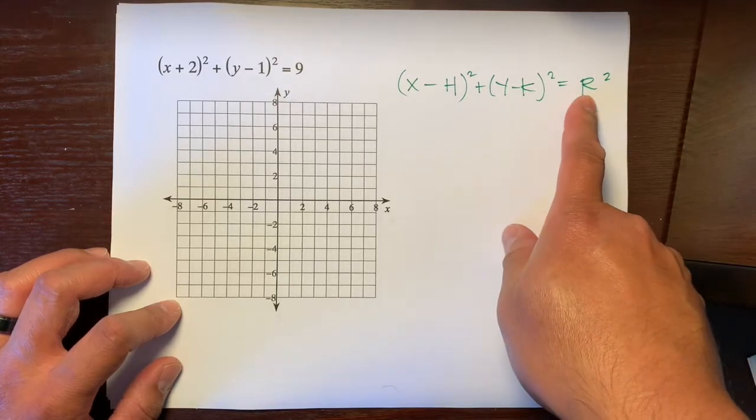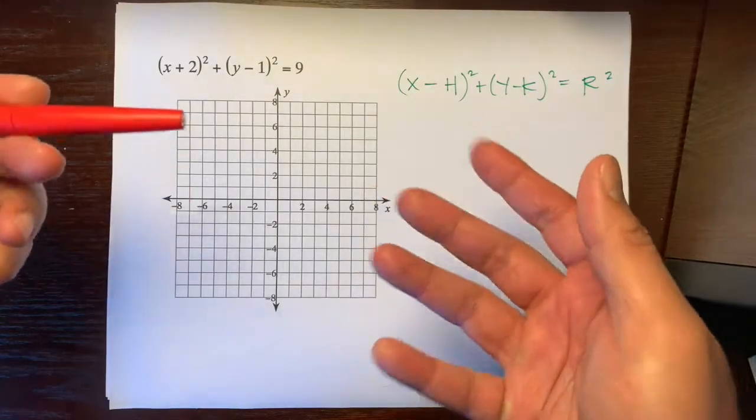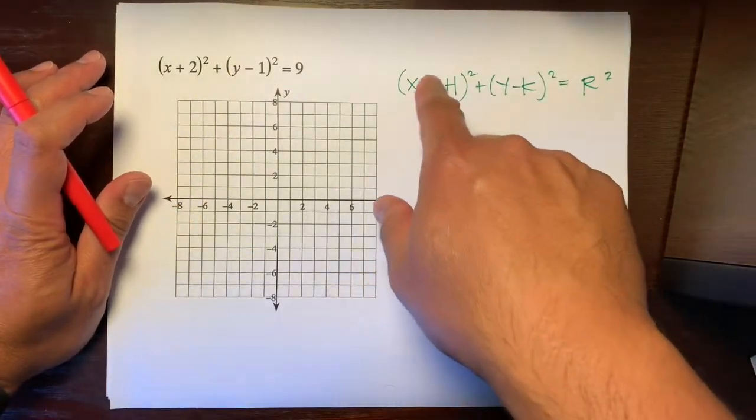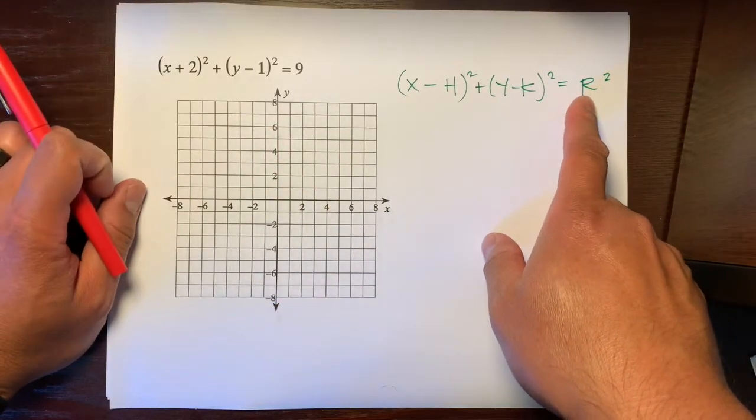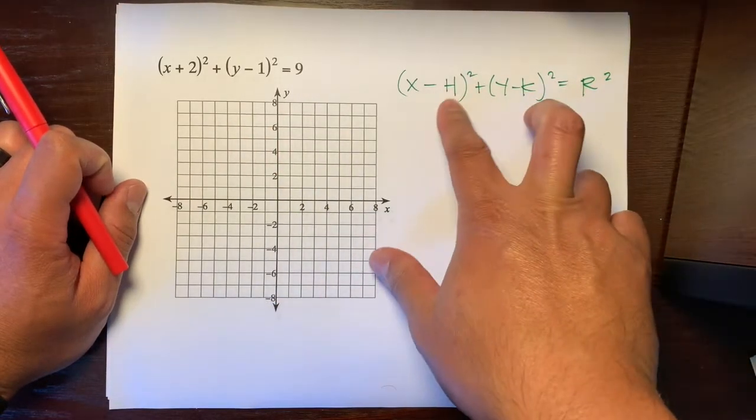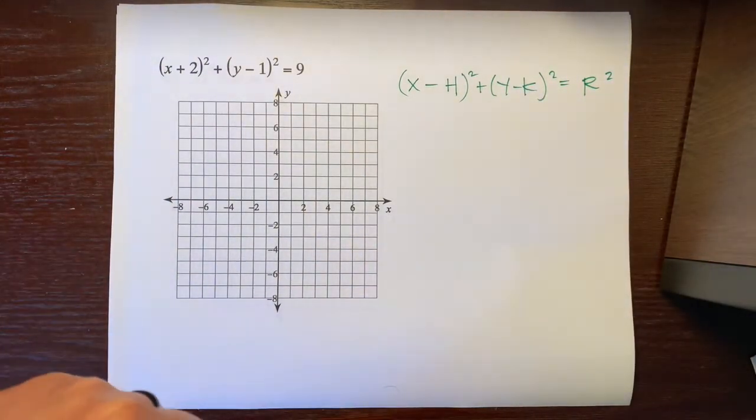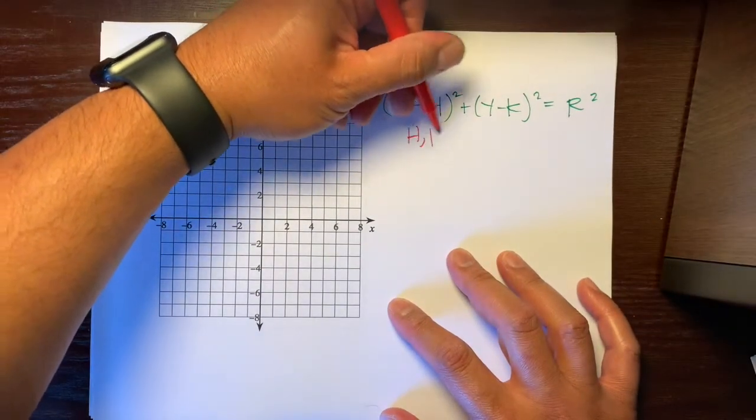This R represents the radius, and if you remember, the formula was formed by using the Pythagorean theorem. That's why we have the square plus the square equals the other square. Here's R, represents the radius, and this H and K represent the center. H and K are the center.